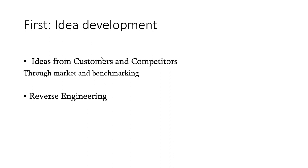In the first step — idea development for new product — ideas will come from customers or competitors. The idea represents a flow of information that will help you make a decision for the production of a new product and how you put the product specification correctly. Therefore, you need a huge amount of information to put a correct specification for your new product.